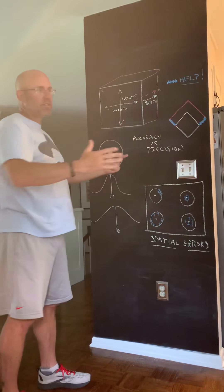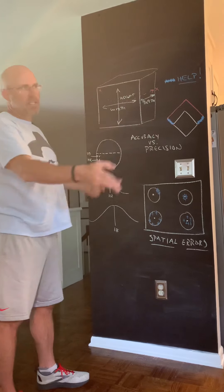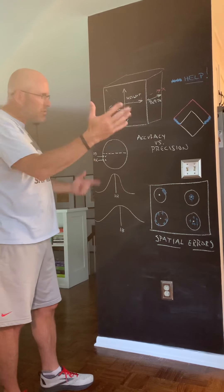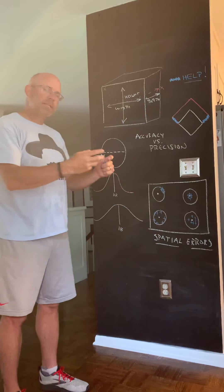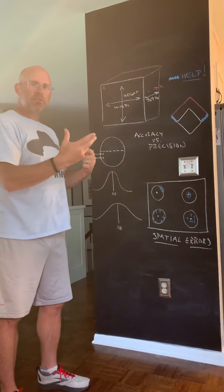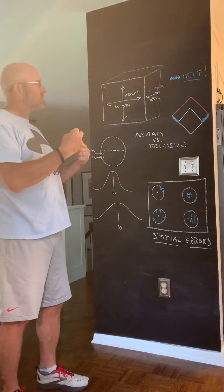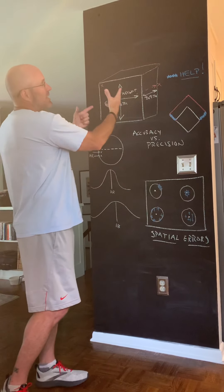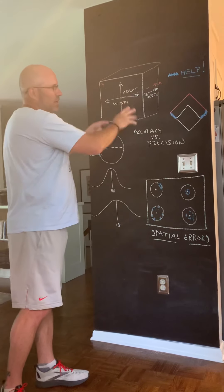Pitchers also have a width, often referred to as command on the edges. And then they have height — the ability to sink it and the ability to be up in the zone with high spin rate or something to that effect. So every pitcher competes with a certain prism, and many times that's why it's difficult to gauge when pitchers are successful — even without overpowering stuff. The hitter has to deal with all of this, and that's really difficult.